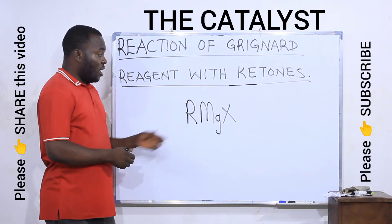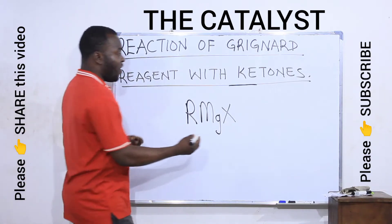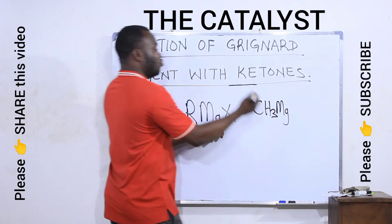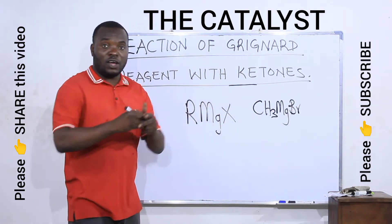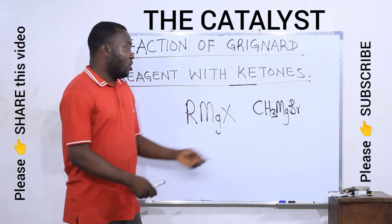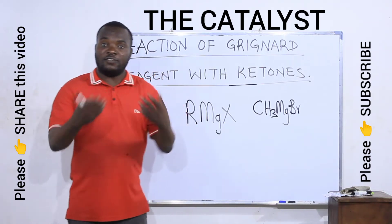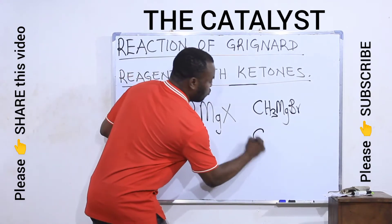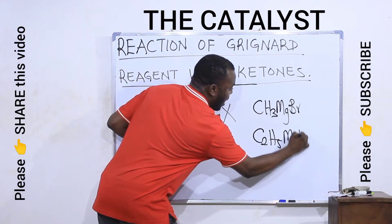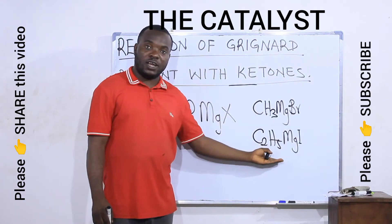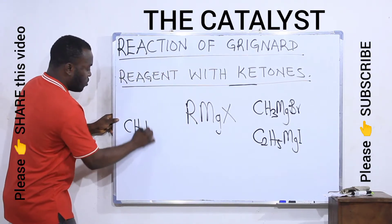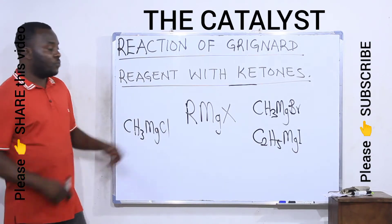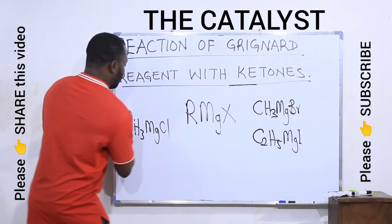We can formulate Grignard reagents on our own — we can take any alkyl group and any halogen of our choice. For example, if I have methyl as my alkyl group attached to magnesium, I can choose bromine as the halogen. You can use iodine, chlorine, propyl, or ethyl. This gives examples such as methyl magnesium iodide and methyl magnesium chloride.